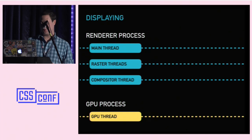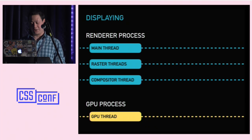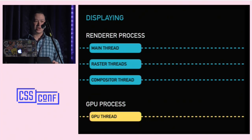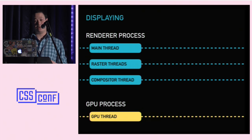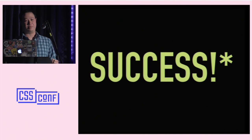The GPU process has one thread in it — the GPU thread — and that is where your GPU, or graphics processing unit, does the work of actually putting pixels on the screen. Here in the final displaying stage, the bitmaps from rasterization are uploaded into the GPU thread where they are treated as textures. Your GPU is very adept at putting textures onto the screen, and finally — success — we have pixels pushed to the screen.